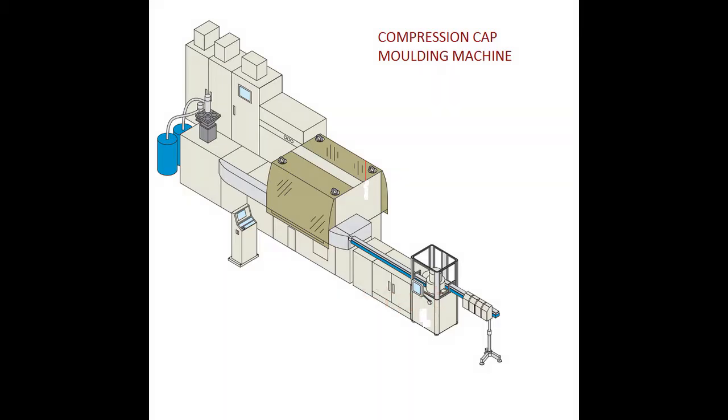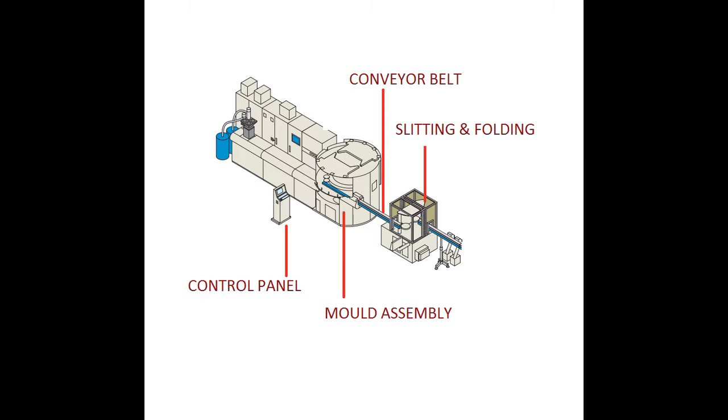As you can see on your screens, this is what we call a compression molding machine. The biggest parts of the compression molding machine are first the conveyor belt, then there is a control panel which is near to the compression molding machine, then there is a mold assembly, and further we have slitting and folding mechanism.